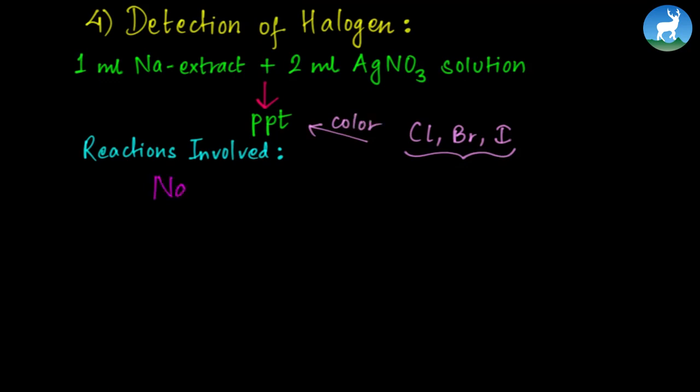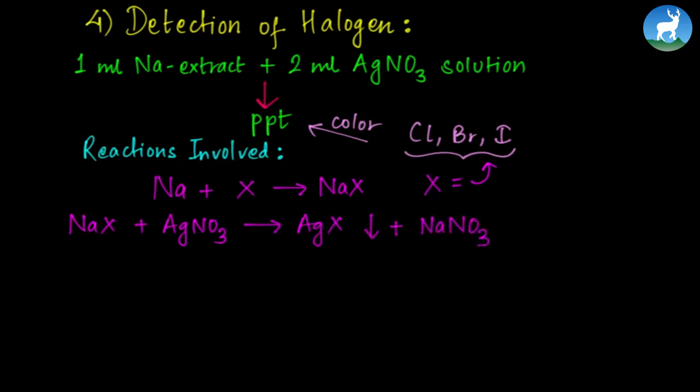If the organic compound contains halogen, sodium halide (NaX) is formed. The reaction is NaX + AgNO₃ → AgX + NaNO₃. If X is Cl, silver chloride forms as white precipitate, indicating chlorine is present.